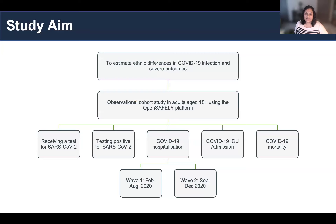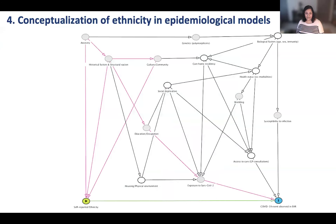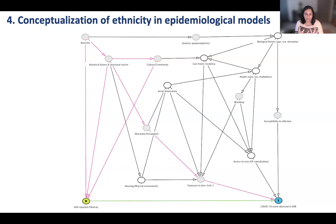Our study of COVID-19 infection outcomes was made possible by a wide variety of data linkages, all available in real time with data updated on a weekly basis. We looked at a range of outcomes across the two waves of the COVID-19 pandemic. This is a causal diagram — a DAG, a directed acyclic graph — which shows the hypothesized mechanisms of how ethnicity was related to COVID-19 events observed in the electronic health record. Ethnicity itself doesn't cause the outcomes, but rather works through a range of pathways and factors highlighted in this diagram.